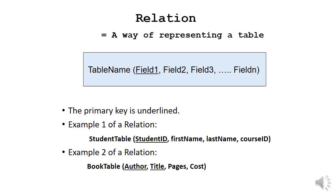There's an example of a relation, the student table we saw earlier. So student table is the name of the table. Then in the brackets, student ID being the primary key, first name, last name, and course ID. Or example two. You have the book table. Author and title are the composite key. So we've underlined both. And then the pages and the cost of the books. These are all different ways. These are relations which show how to present a table.